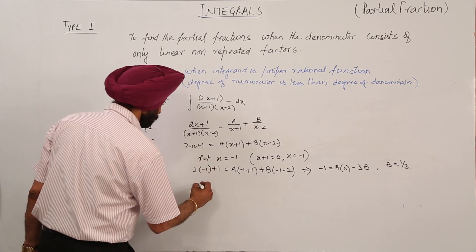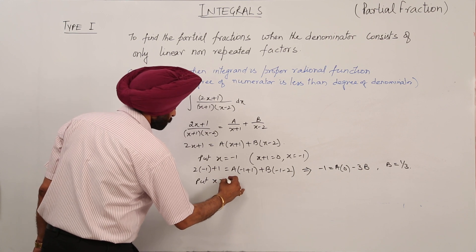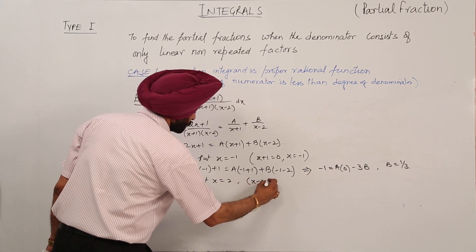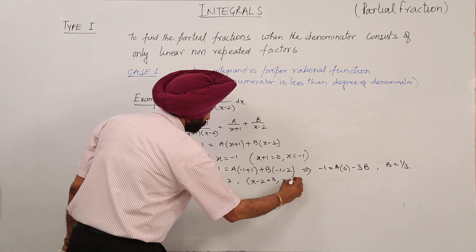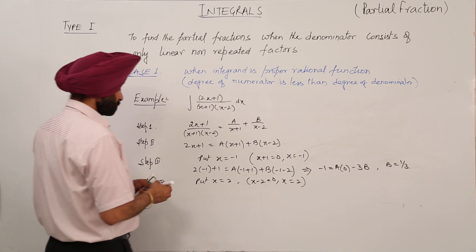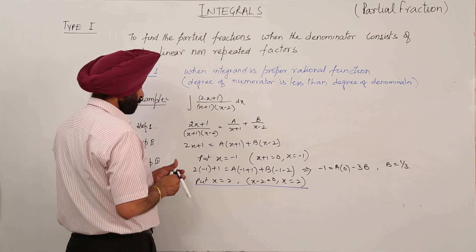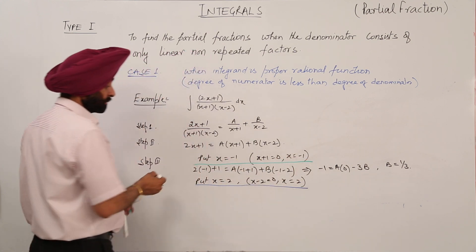Step 4: Put x is equal to 2. We have x minus 2 is equal to 0, so x is equal to 2. We take this term, and earlier we have taken that term.